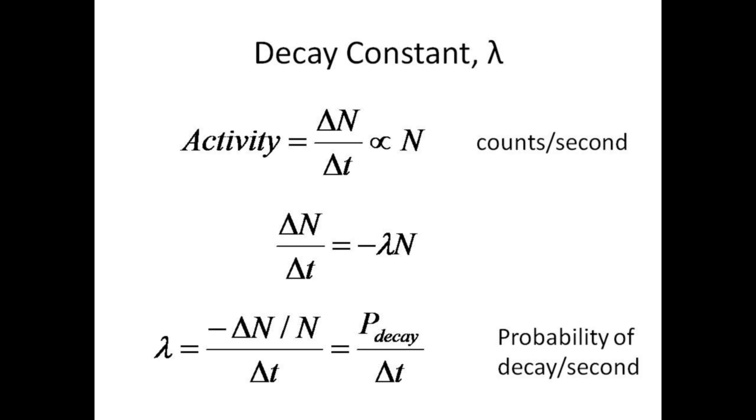The negative in the proportion just indicates that the numbers are dwindling rather than growing. If the likelihood of a given nucleus decaying in a given second is small, then lambda represents the probability of that nucleus undergoing a decay each second.